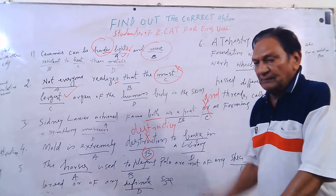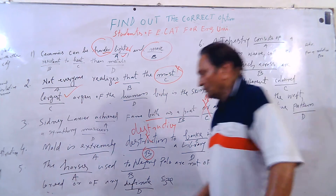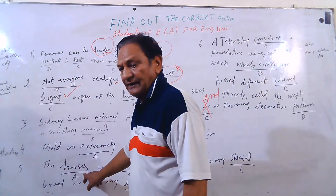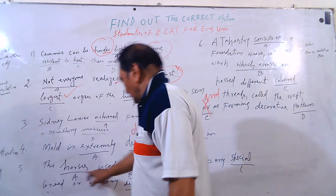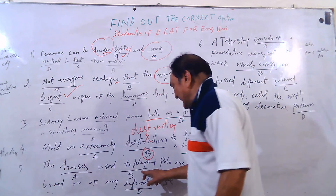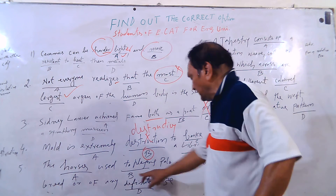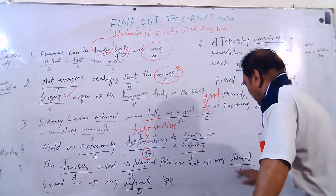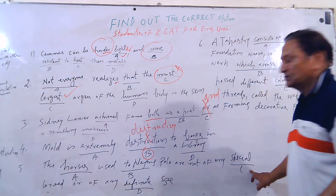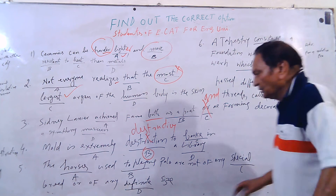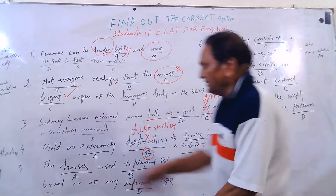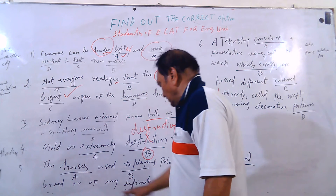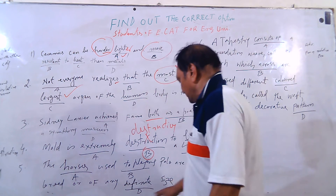The horses option A used to playing. Option B: polo are not of any special. Special option C: breed. This is breed. All of any definite size.